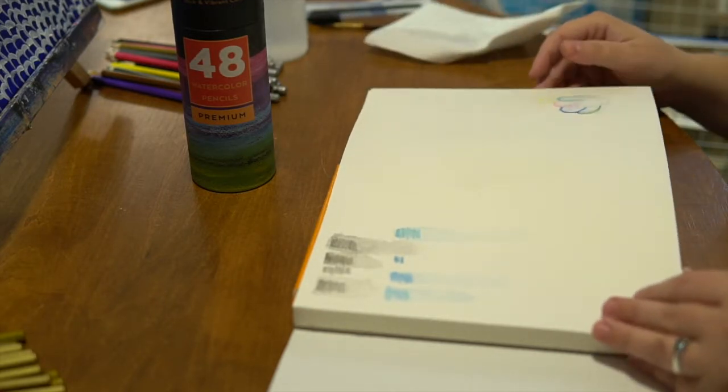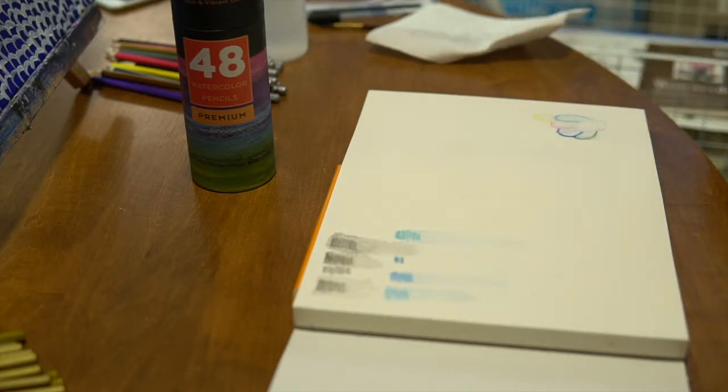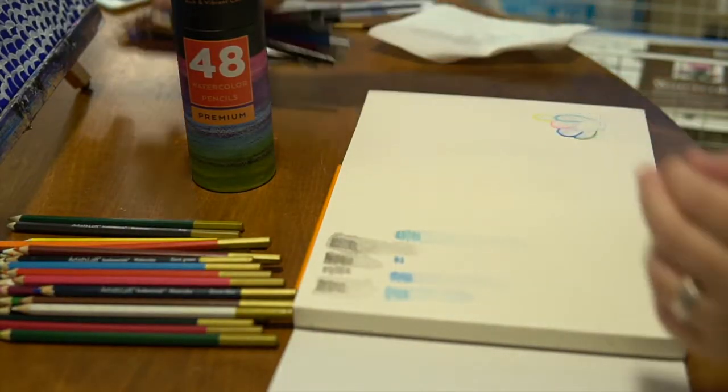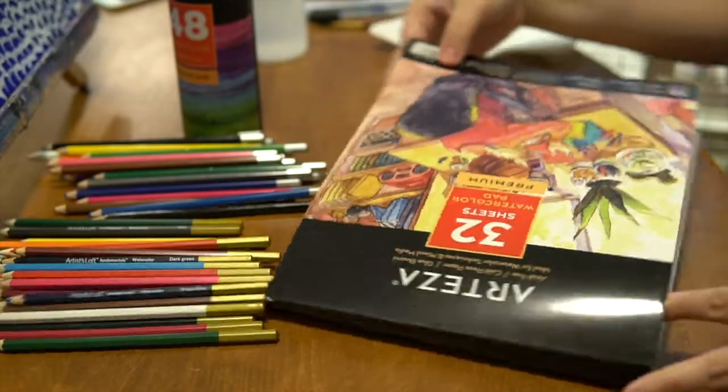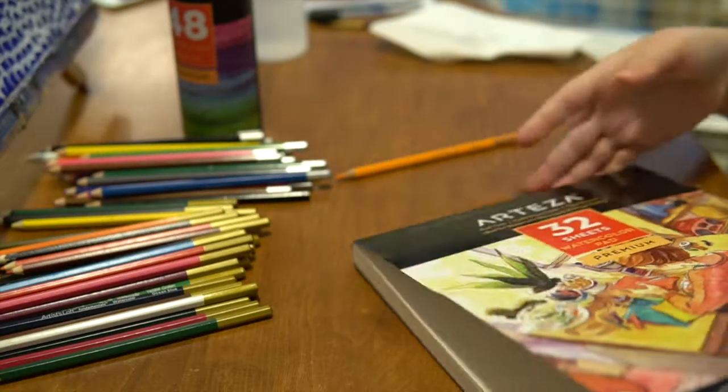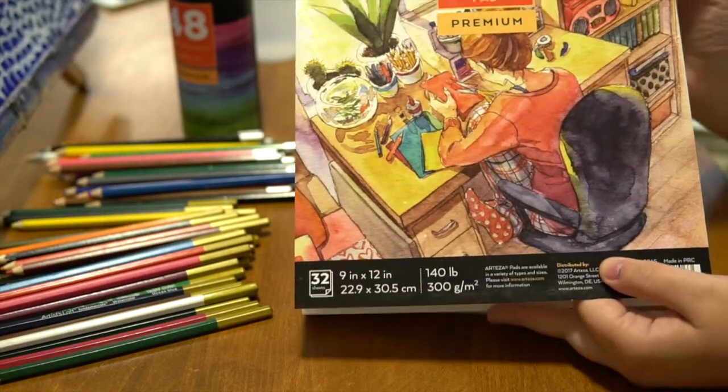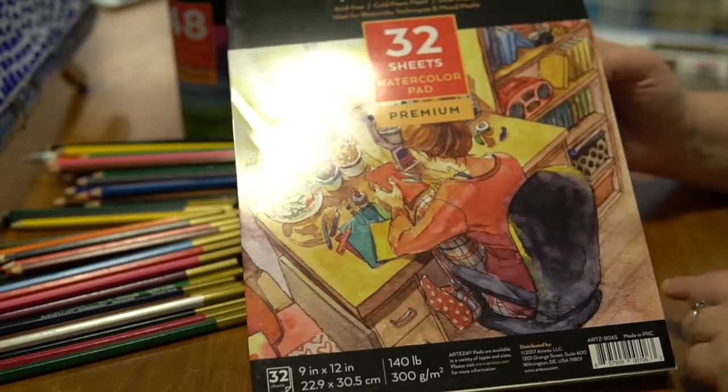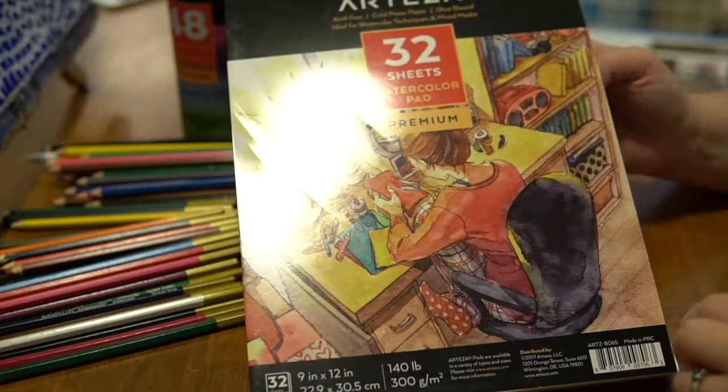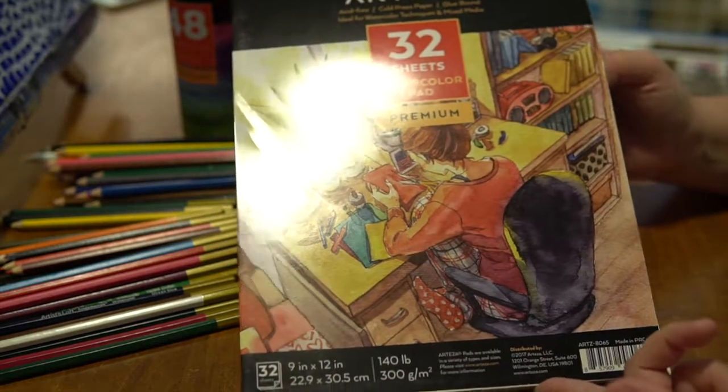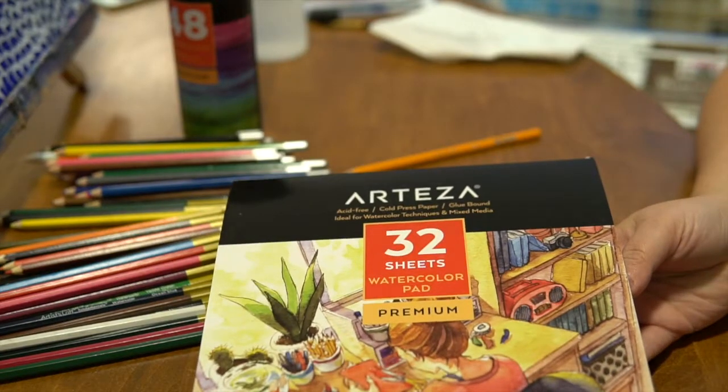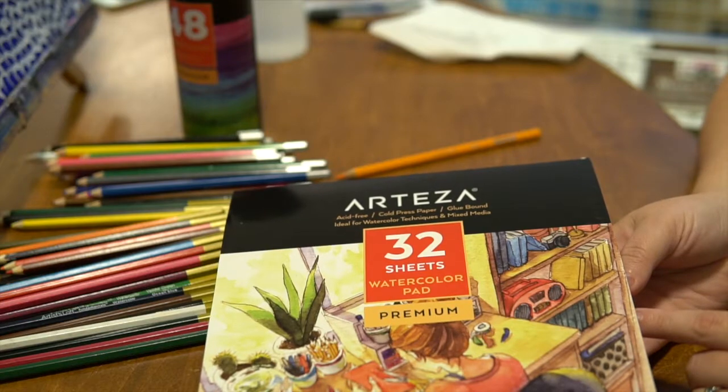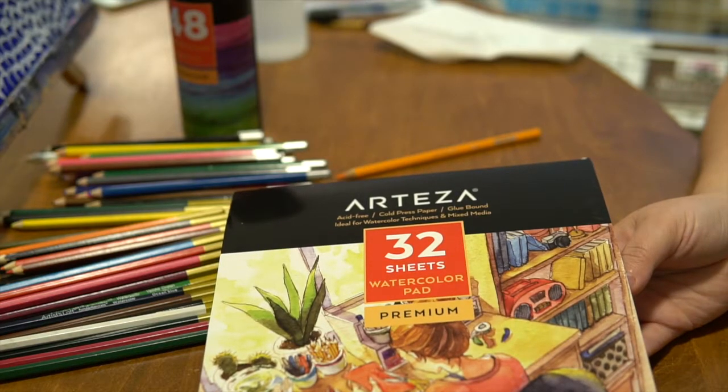I hope that my review has helped you with the three brands of watercolor pencils that we've gone through today and some of the paper we've discussed. This is the Artesia acid-free cold-pressed paper, glue-bound, ideal for watercolor techniques, and mixed media. There's 32 sheets in each pad, and it did come with two pads. And it's 140-pound paper. So it definitely was worth it. I hope this helps you out. And come back for the next video.